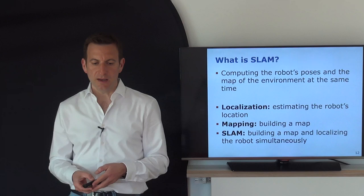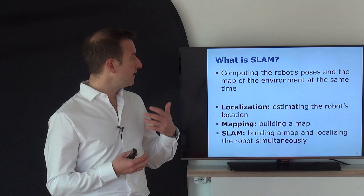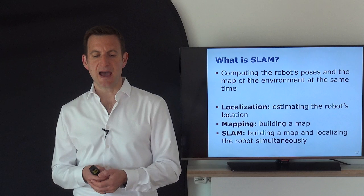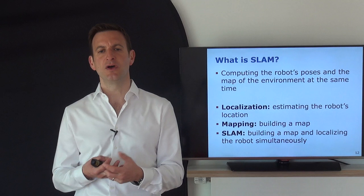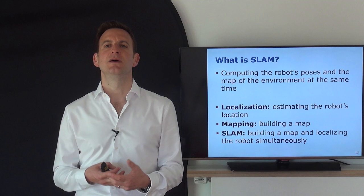So what is SLAM? SLAM means we want to compute the poses — that means position and heading — of a mobile platform, of a robot, or of a sensor, while the sensor moves through the environment. At the same time, while estimating the pose, we also want to build a map of the environment, a model of what the environment looks like.